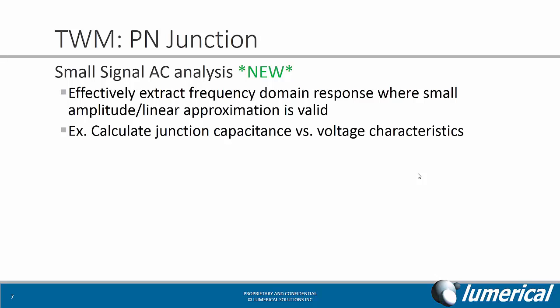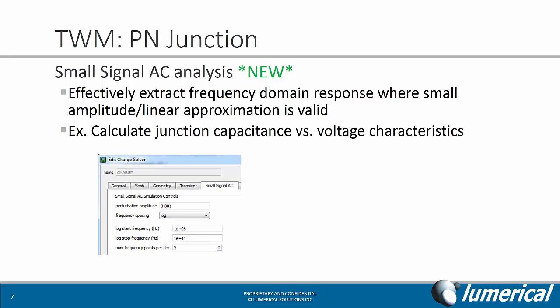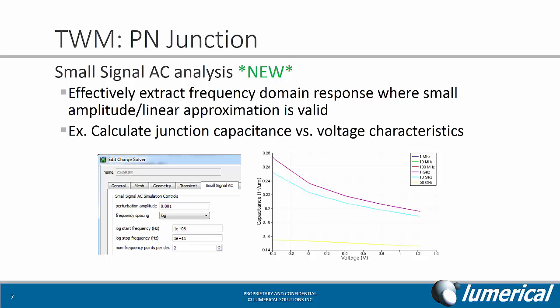For the PN junction, one can take advantage of the new small signal AC capabilities in Device to effectively extract the frequency domain response, where the linear assumption is valid. All you have to do is specify the frequency range and the voltages, and you can calculate, for example, the capacitance as a function of voltage at any frequency. For this PN junction, you can see that the capacitance doesn't change very much up to 1 GHz, which is expected for reverse bias operation.